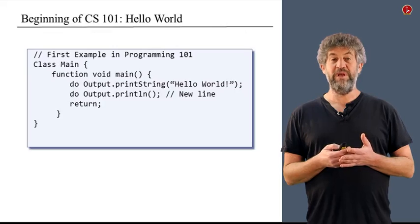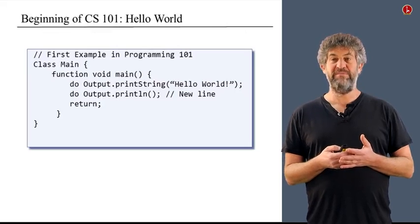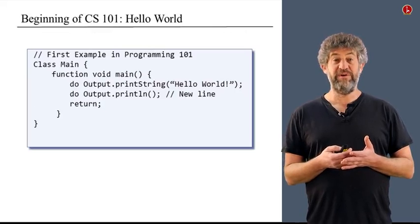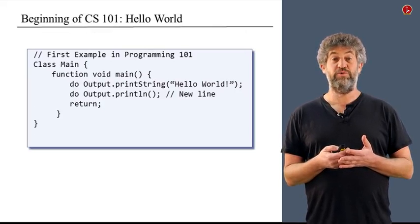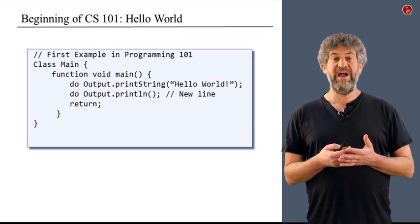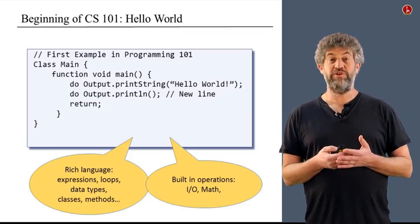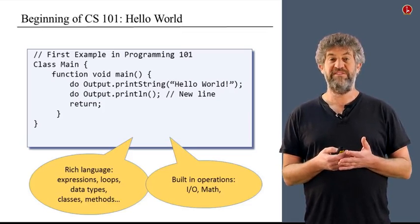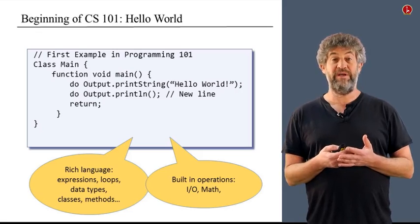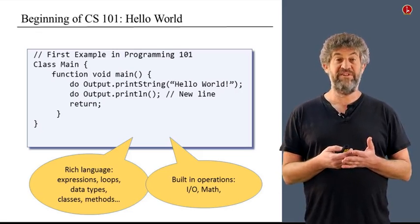Most programmers really want to work with a high level language, something like this example, that is very typical of what you see in introduction to programming courses. So the kind of things that you have in such high level language includes a rich language, loops, data types, methods, abstraction, many things that do not appear in the assembly language that is the end of this course.